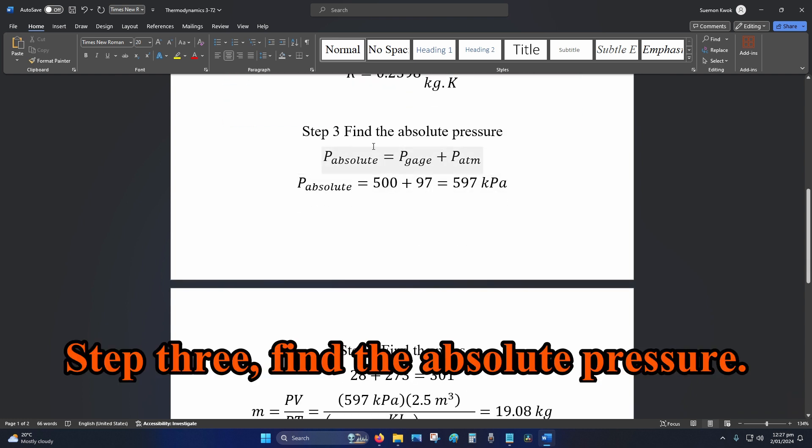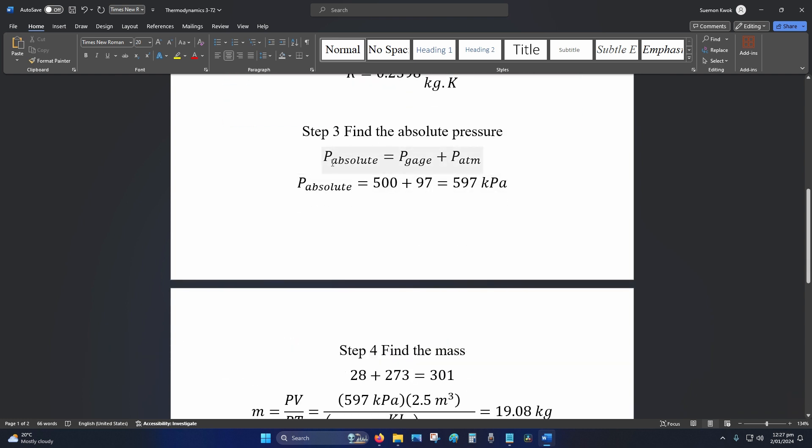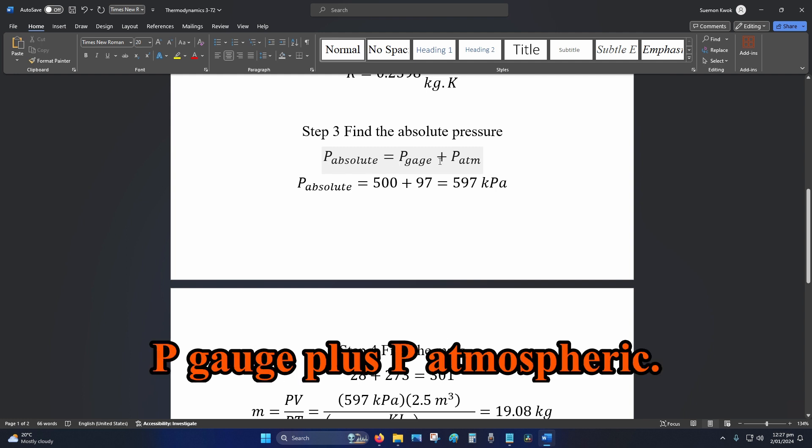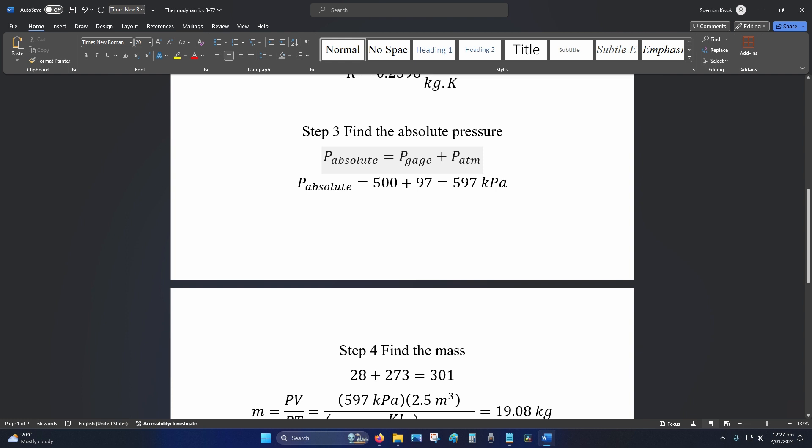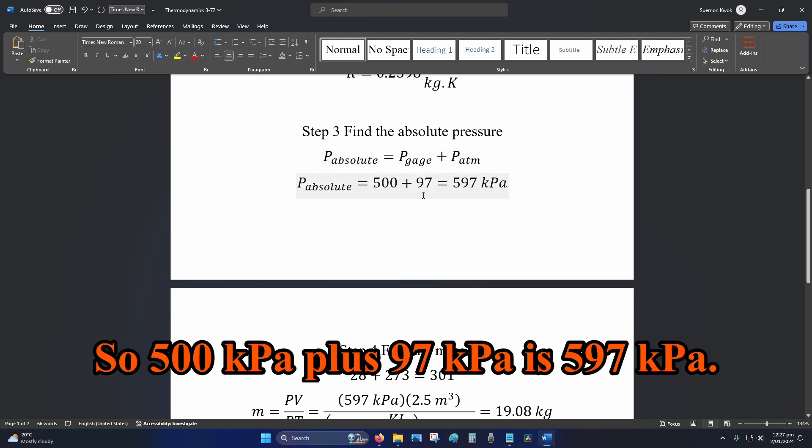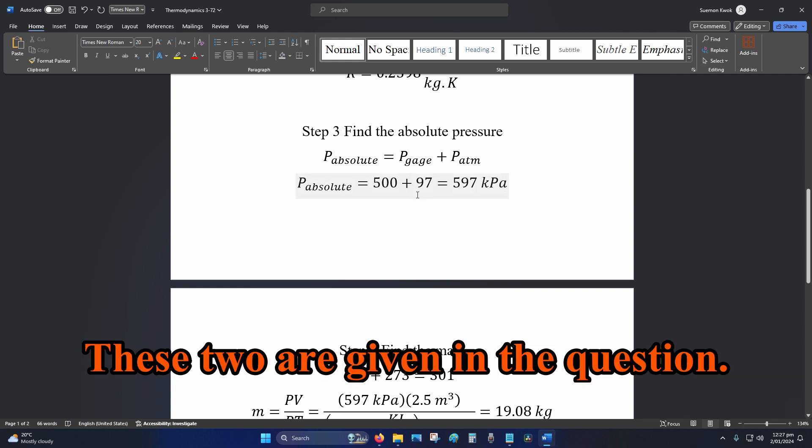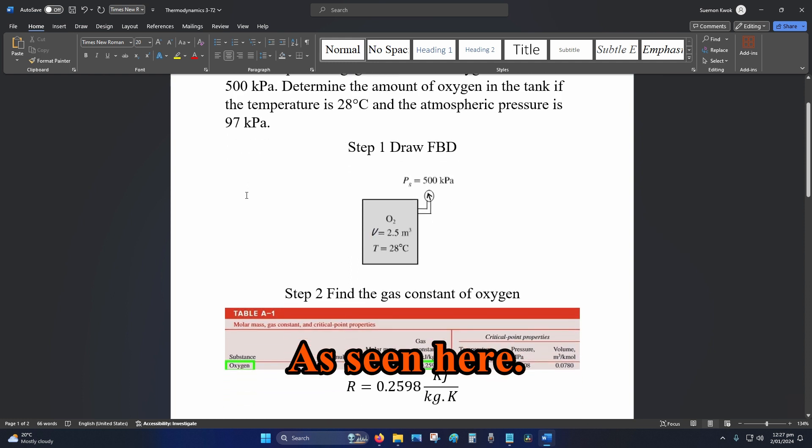Step 3: Find the absolute pressure. So P absolute is equal to P gauge plus P atmospheric, so 500 kPa plus 97 kPa is 597 kPa. These two are given in the question as seen here.